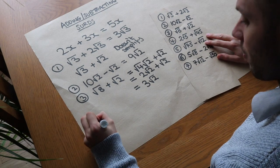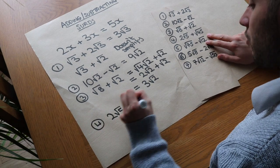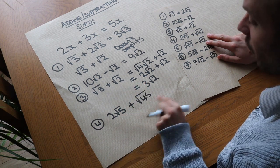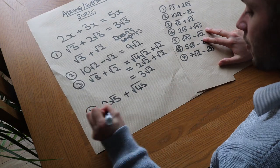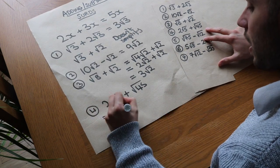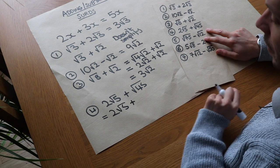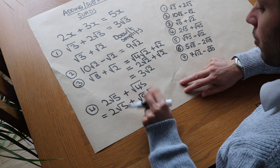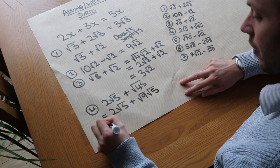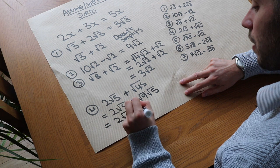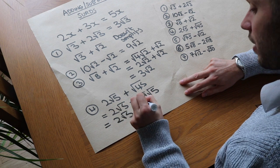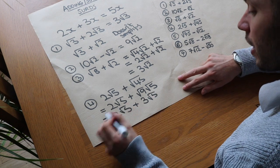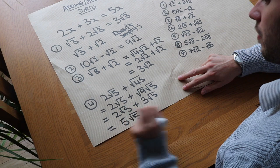What about 4? We've got 2 root 5 plus root 45. Now that surd is in its simplest form, but that surd is not because there is a square factor. So we've got 2 root 5 plus, what's the biggest square number that goes into 45? Well it's 9. So we could write it as root 9 root 5. So that becomes 2 root 5 plus the square root of 9 is 3, so it's 3 root 5. And then 2 lots of root 5 plus 3 lots of root 5 is 5 lots of root 5, so it's 5 root 5.